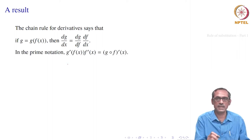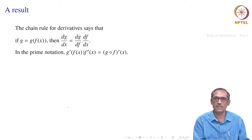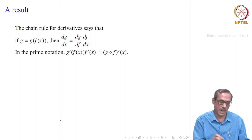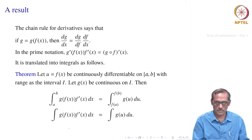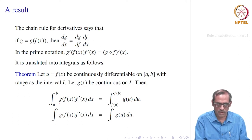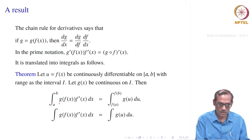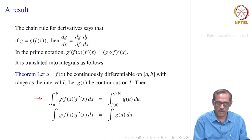In prime notation, it will be g′(f(x)) · f′(x) equal to the derivative of the composite function g of f. Now we translate that into integrals. Suppose the integrand — the function to be integrated — is in the form: integral from a to b of g(f(x)) · f′(x) dx.